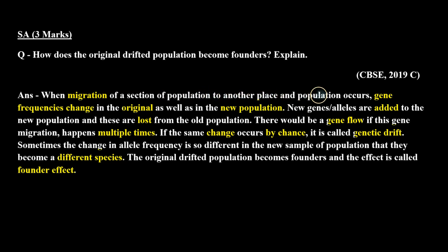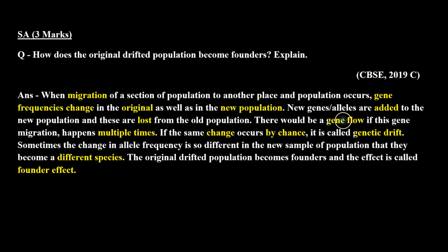So the answer is: when migration of a section of population to another place occurs, gene frequencies change in the original as well as in the new population. New genes or alleles are added to the new population and these are lost from the old population. There would be a gene flow if this gene migration happens multiple times.